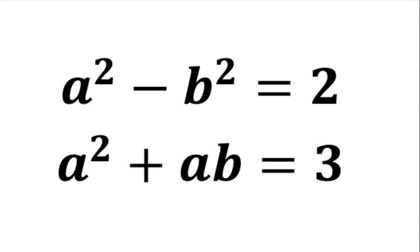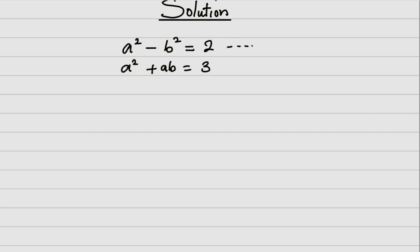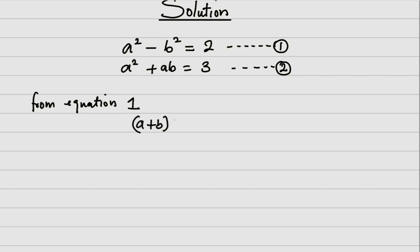Hello students, I'm here once again with a very interesting olympiad question, and I want to make sure you understand this, so follow me gradually to learn. Let this be equation one and this my equation two. From equation one, I can use the knowledge of difference of two squares, so that is going to be (a + b) into (a - b). Recall, we use the knowledge of difference of two squares — take note of that.